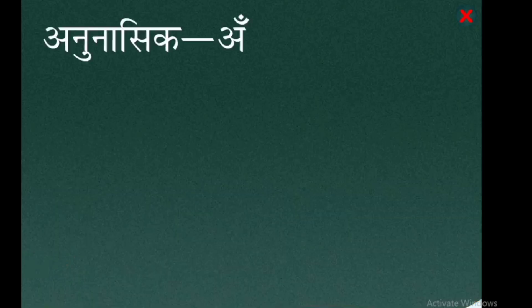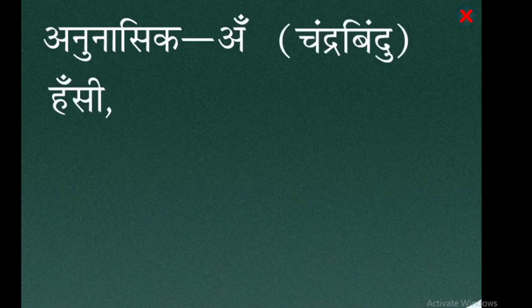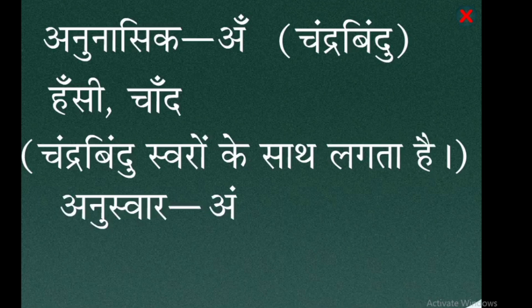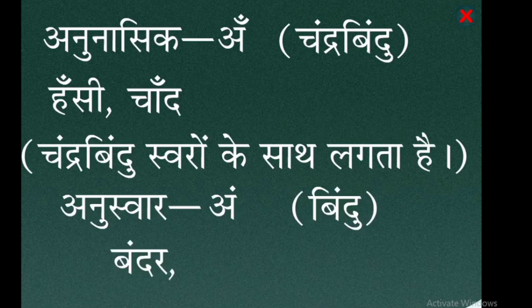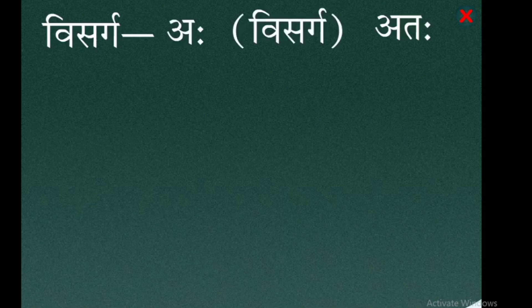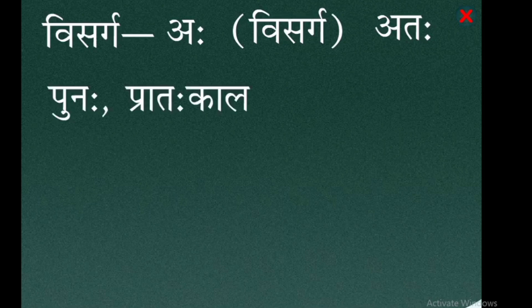Anunasik: अँ — chandrabindu, jaise चाँद। Chandrabindu swaron ke saath lagta hai। Anuswar: अं — bindu, jaise बंदर, मंदिर। Visarg: अः — jaise अतः, पुनः, प्रातःकाल।